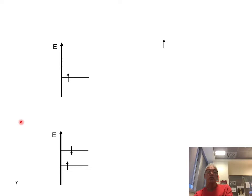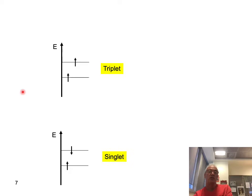However, since this extra electron was injected from a contact far away, its spin is not necessarily correlated with the one here. We could find ourselves in a situation where the spins are the same or the sum of them is non-zero. So now we have two types of exciton: one type where the sum of the spins is zero, and the other type where the sum is non-zero.